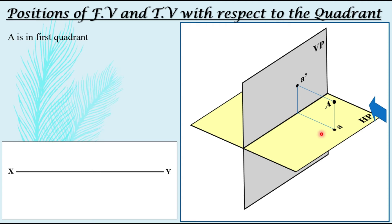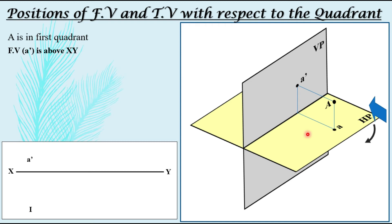Let us understand how it will be drawn on our page. The XY line is the line at the intersection of the horizontal and vertical planes. For the first quadrant, when looking from this side, A' is obtained above the XY line — so the front view A' is above XY. Since we do not have this 3D surface to draw in books, we rotate the horizontal plane 90 degrees clockwise. Once rotated, the top view of A will go below the XY line. So for the first quadrant: front view is above XY line and top view is below XY line.